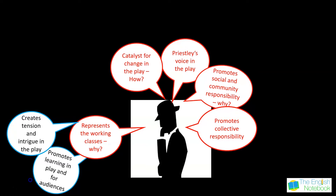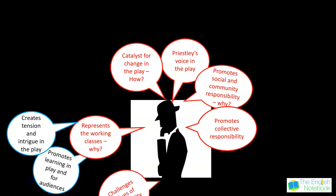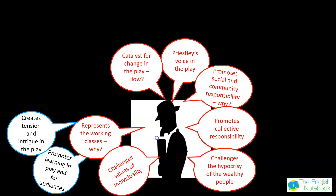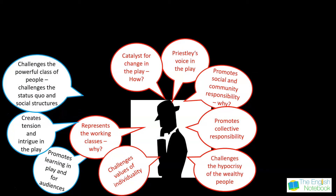Through his line of questioning he actually controls the action on stage, the speech on stage, and the movement on stage. We see that he challenges values of individuality — because he promotes collective responsibility, he really challenges their sense of self-importance. He is depicted as someone who challenges the values of wealthy people and challenges the hypocrisy. For example, we see hypocrisy when Sybil Birling, who runs the women's charity, actually refuses to give Eva Smith any financial help in her time of dire need.